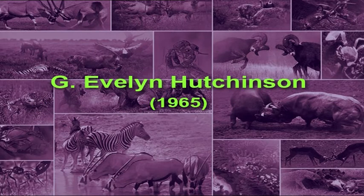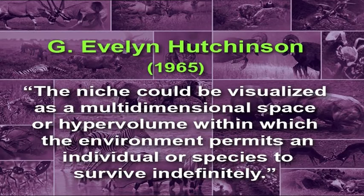Zoologist G. Evelyn Hutchinson of Yale University in 1965 developed the concept of the abstract n-dimensional hyper-volume niche. He suggested that the niche could be visualized as a multi-dimensional space or hyper-volume within which the environment permits an individual or species to survive indefinitely. For example, the niche of a plant might include the temperature range it can tolerate, the intensity of light required for photosynthesis, specific humidity regimes, and minimum quantities of essential soil nutrients for uptake.